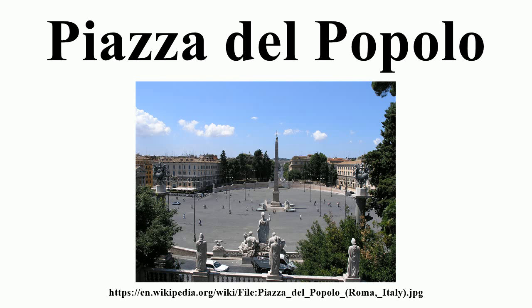Looking from the north, three streets branch out from the piazza into the city, forming the so-called Trident: the Via del Corso in the center, the Via del Babuino to the left, and the Via di Ripeta to the right. The twin churches of Santa Maria dei Miracoli and Santa Maria in Montesanto, begun by Carlo Rainaldi and completed by Bernini and Carlo Fontana, define the junctions of the roads. Close scrutiny of the twin churches reveals that they are not mere copies of one another, but vary in their details, offering variety within their symmetrical balance in the Baroque fashion.